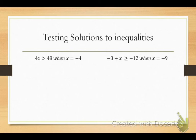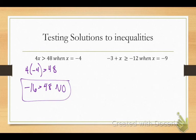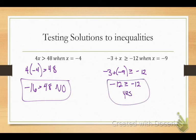4 times negative 4 is greater than 48. Is negative 16 greater than 48? No, it's not. My answer is no. Don't give me a solution that would be. Just tell me it's not. Now, negative 3 plus negative 9, what does that equal? Negative 12 is greater than or equal to negative 12. That's actually true because it has the equal to part. Negative 12 does equal negative 12, so it's yes.